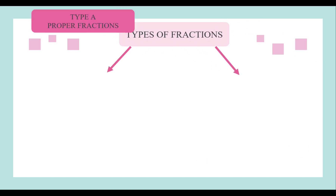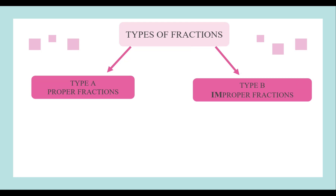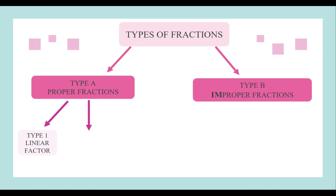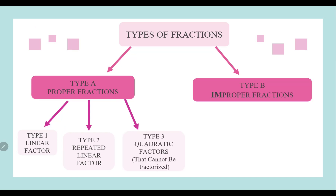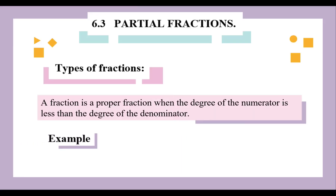Let's see what are the types of fractions that we have. Type A is proper fraction and type B is improper fraction. In proper fraction, we have linear factor, repeated linear factor, and quadratic factors that cannot be factorized. If we get an improper fraction, we will start with long division. When we go through long division, the improper fraction will become a proper fraction. Once it becomes a proper fraction, we will identify whether it is type 1, type 2, or type 3.